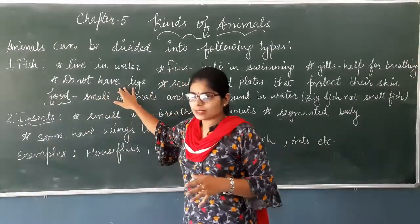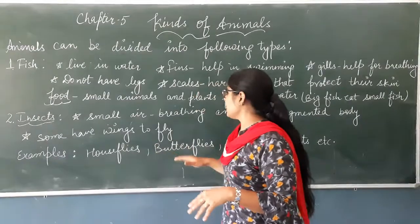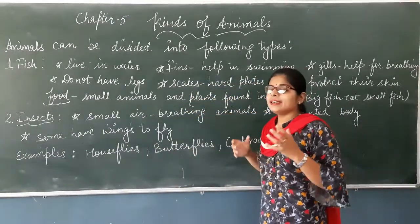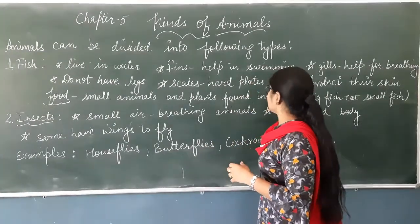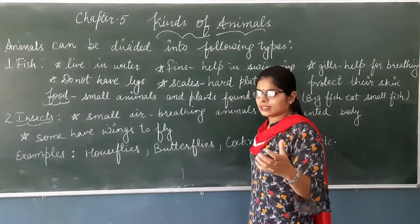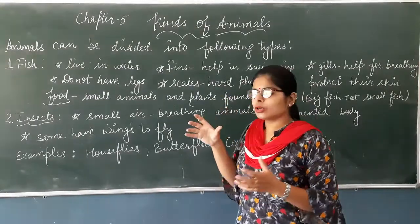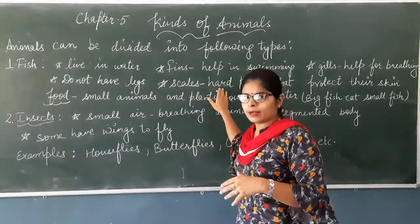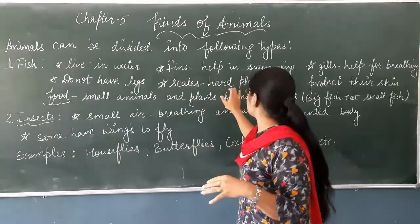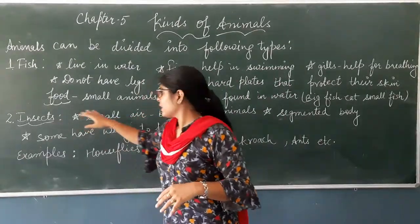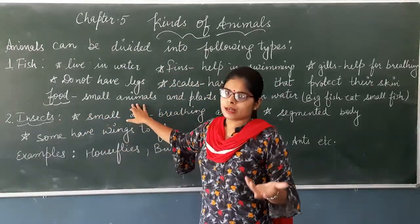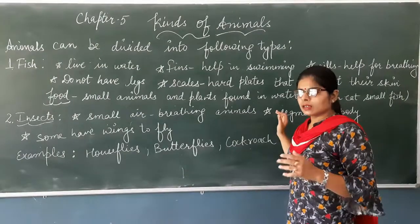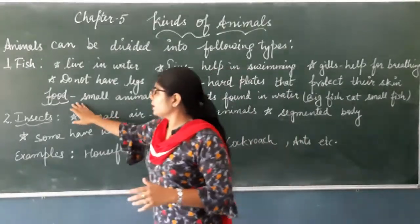Fish do not have legs for movement. They have scales, which are hard plates that protect the fish's skin and body from outer attacks. If any animal attacks them, these scales protect their skin. Their food habits include eating small animals and plants found in water, and some big fish also eat small fish.